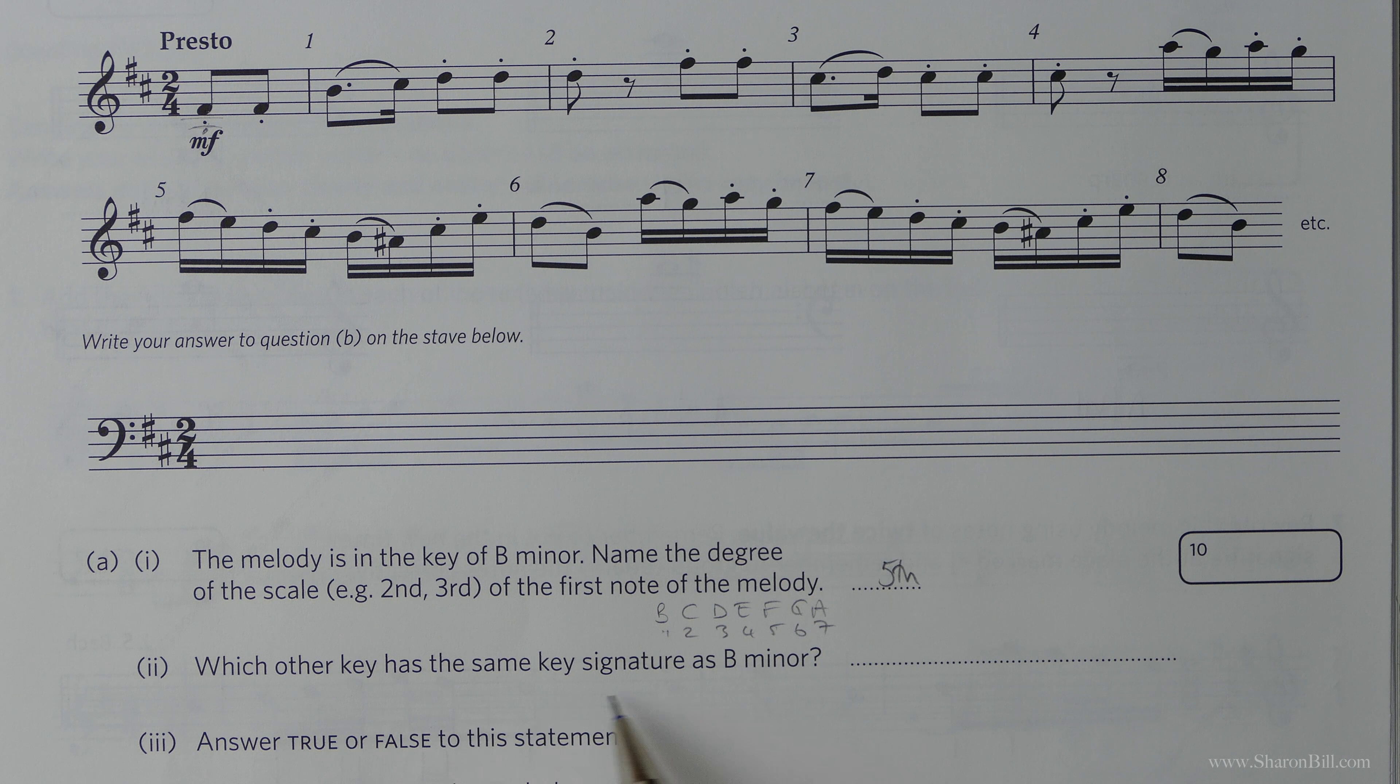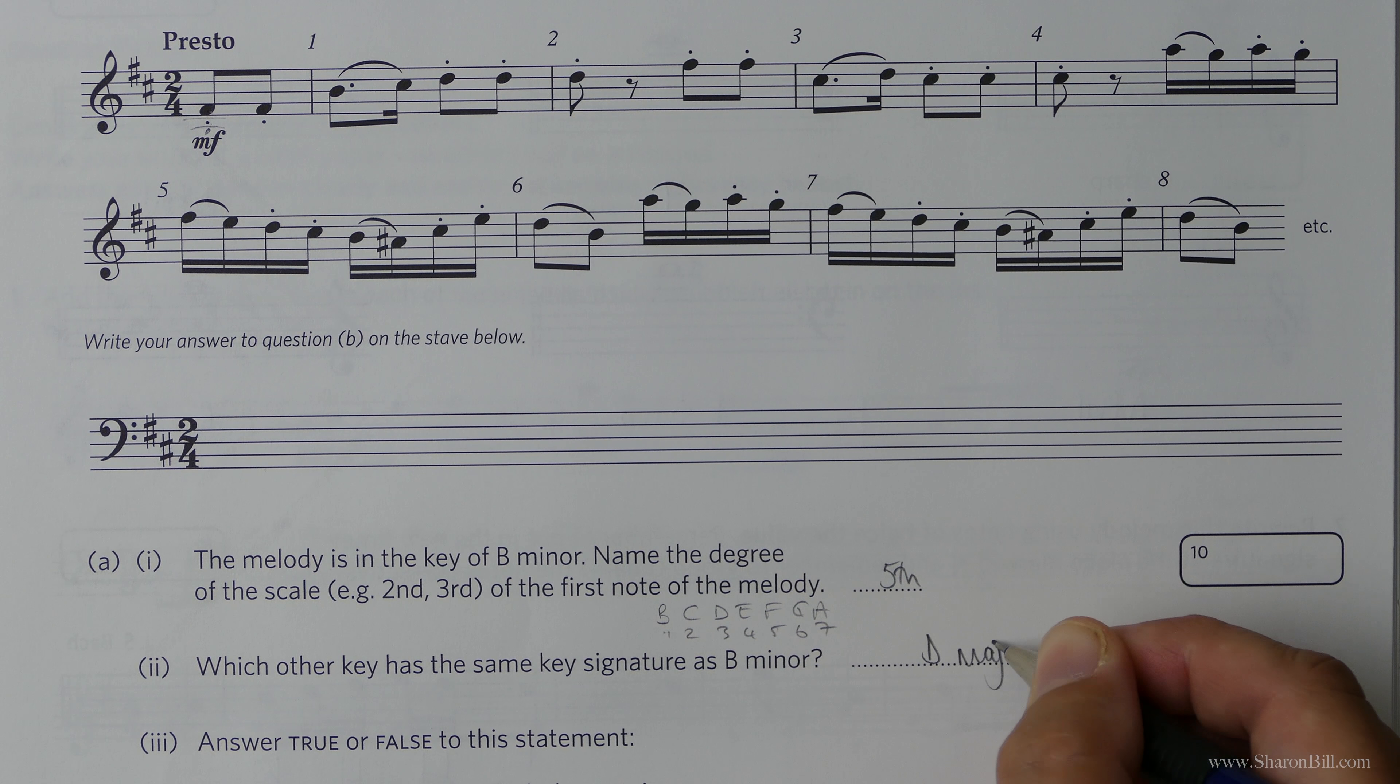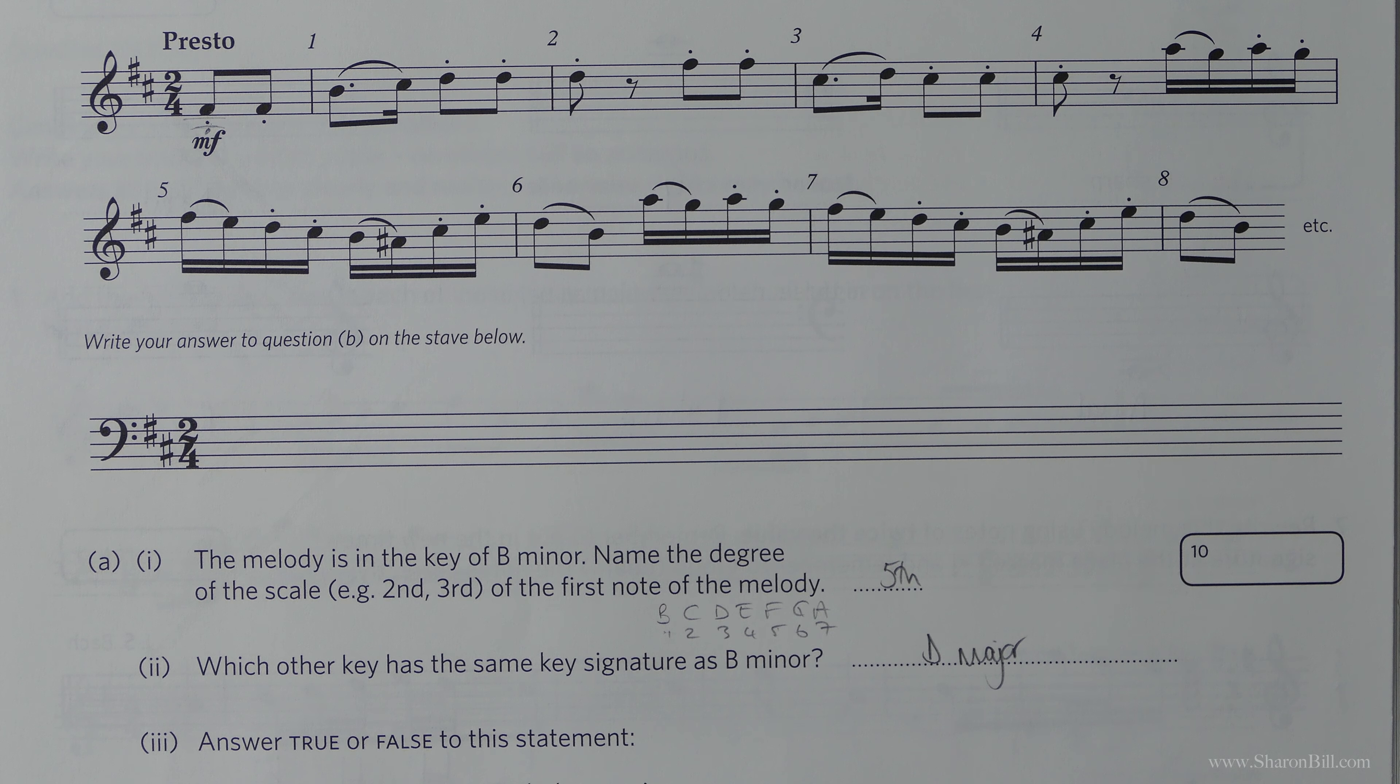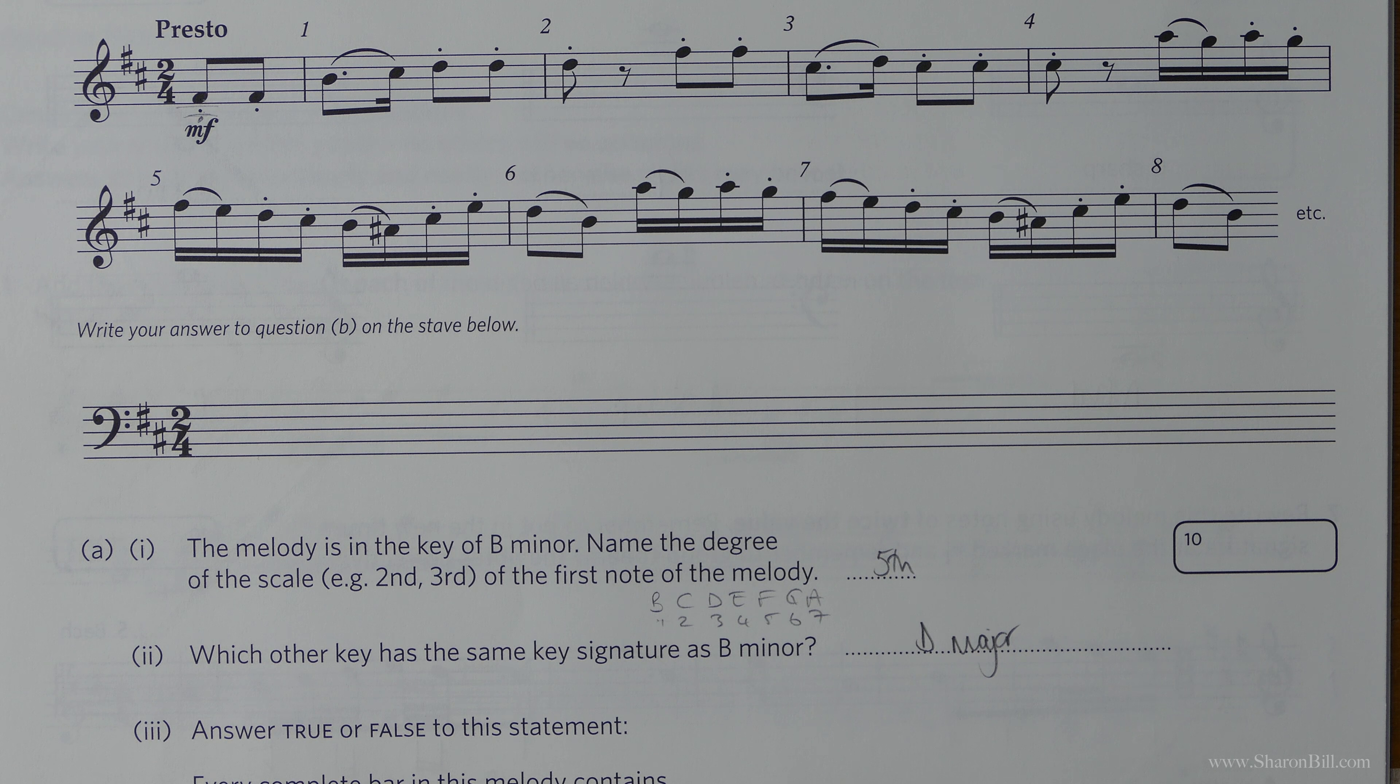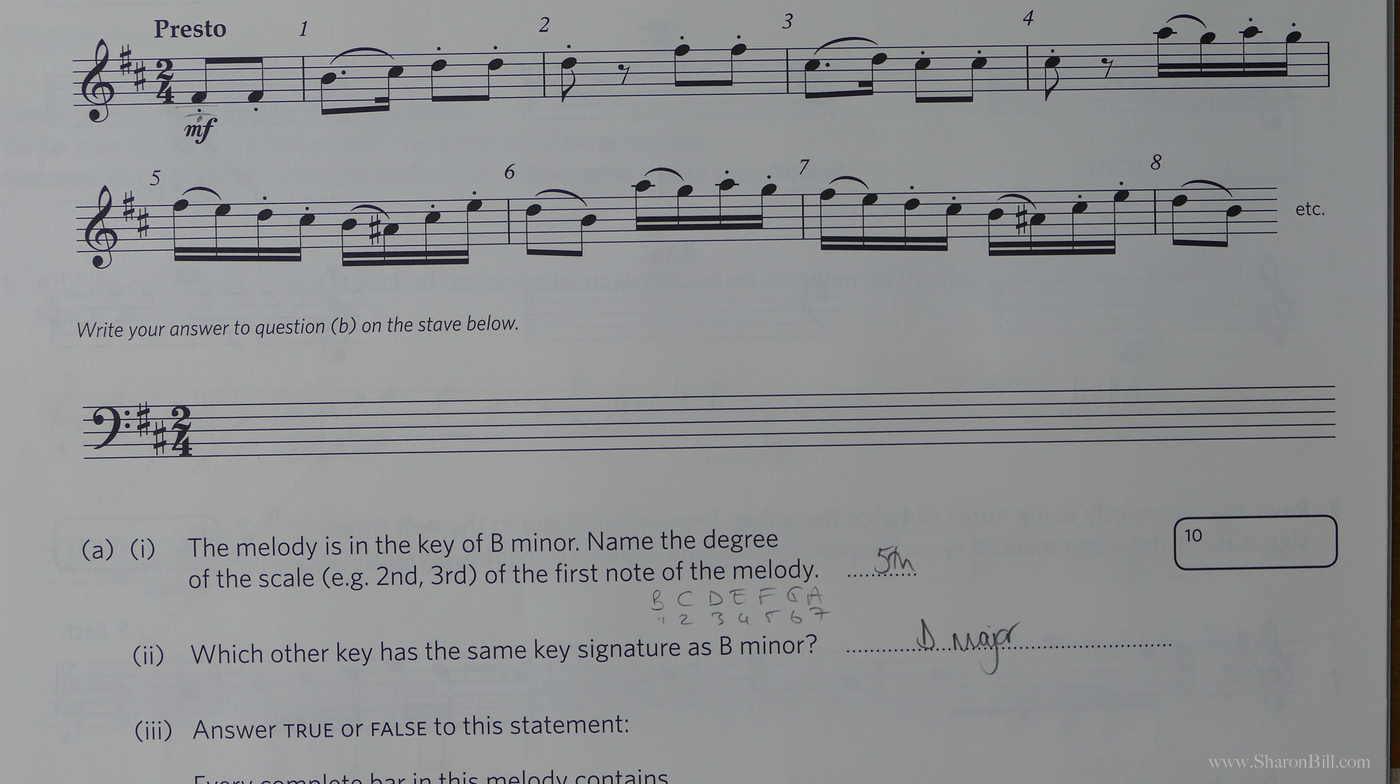Which other key has the same key signature as B minor? Well D major and B minor are related keys. They both share the same key signature. You just need to learn those pairs of keys. Or you can count and work them out, counting up in fifths. If you look at the circle of fifths, there's a video I've done explaining that.